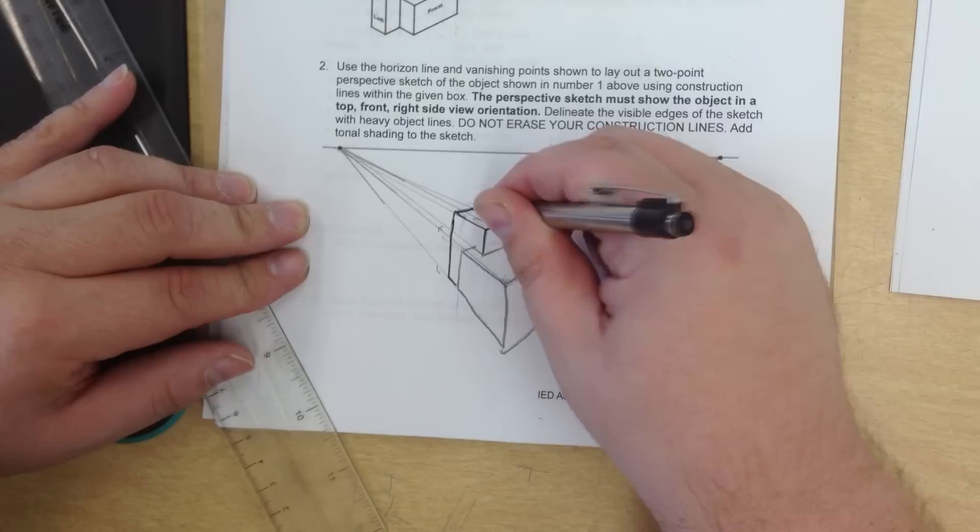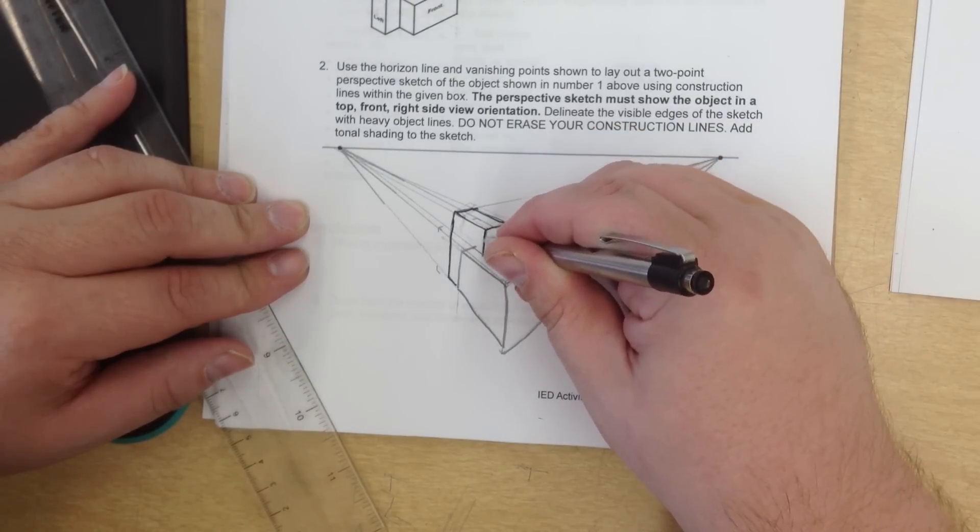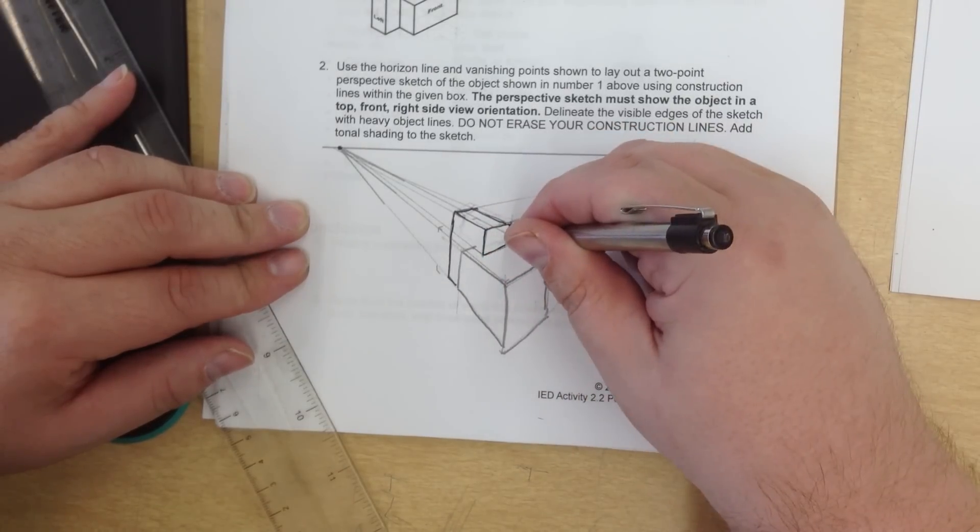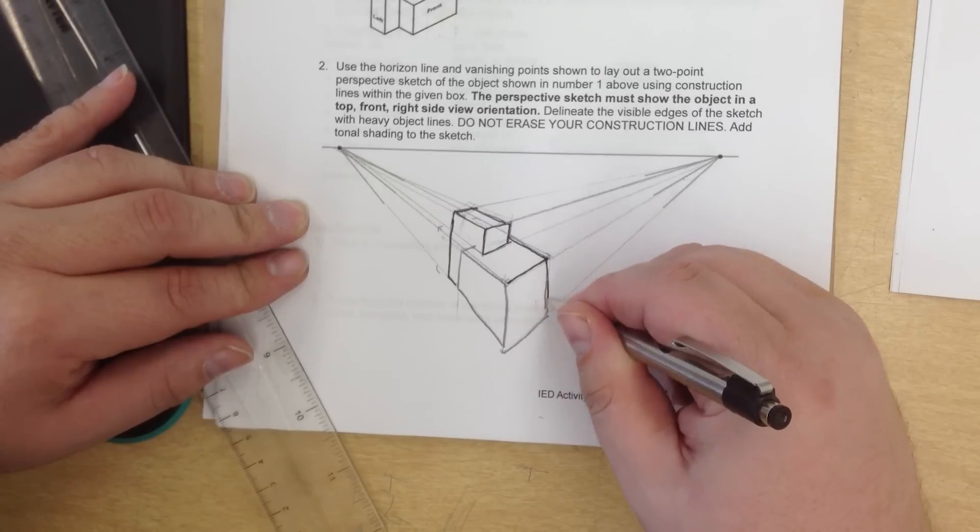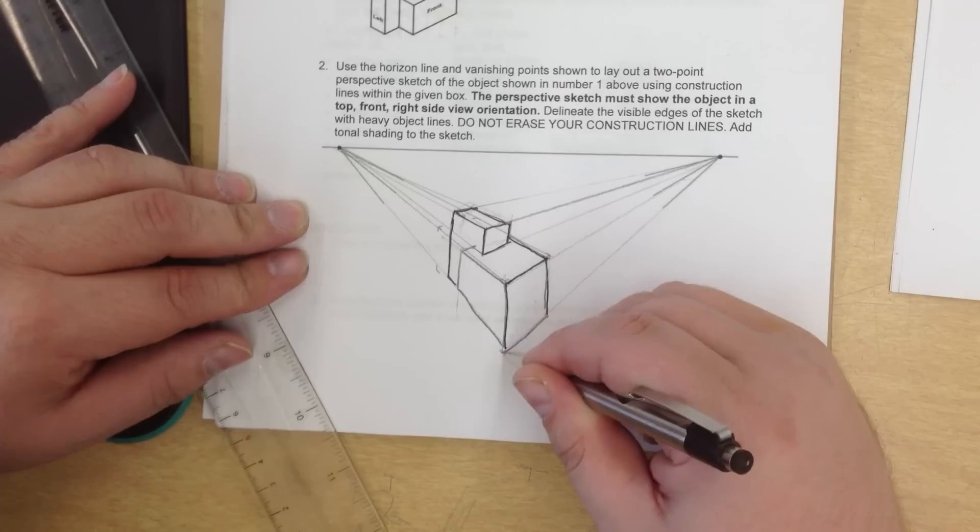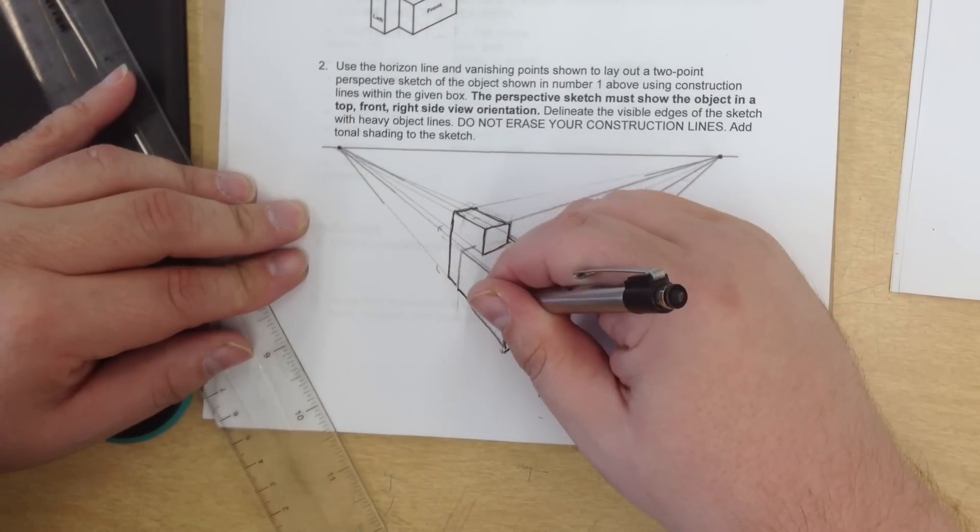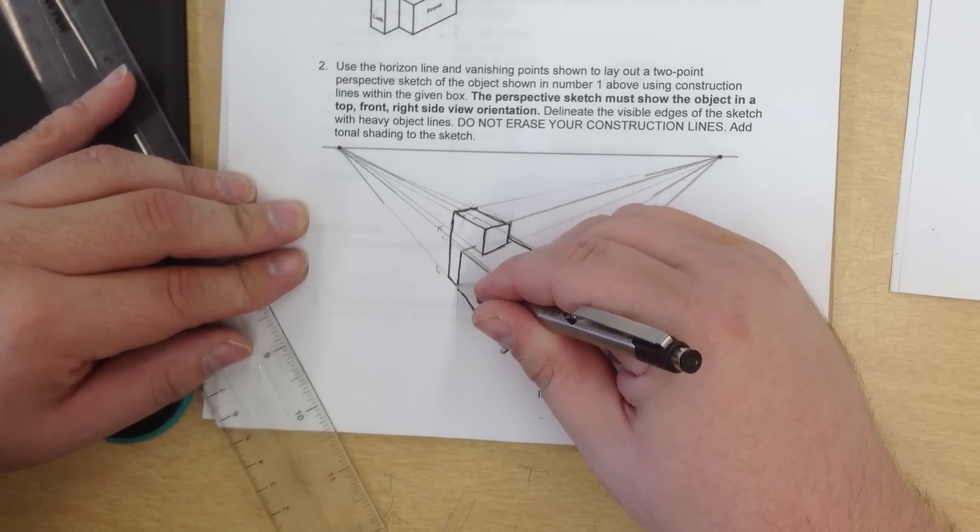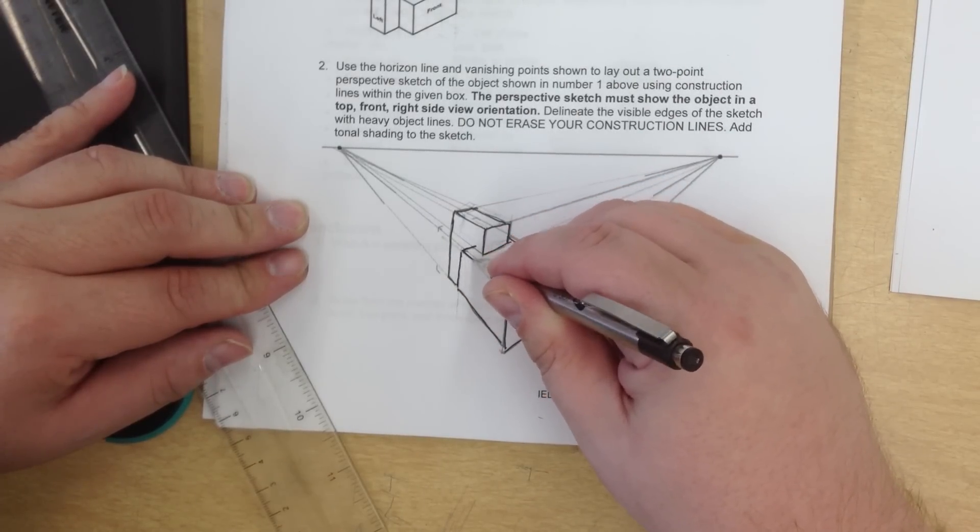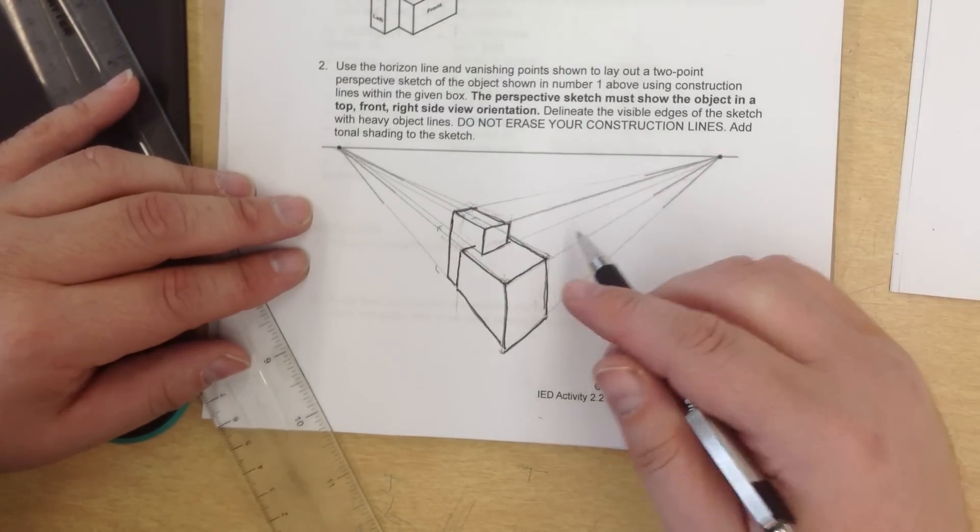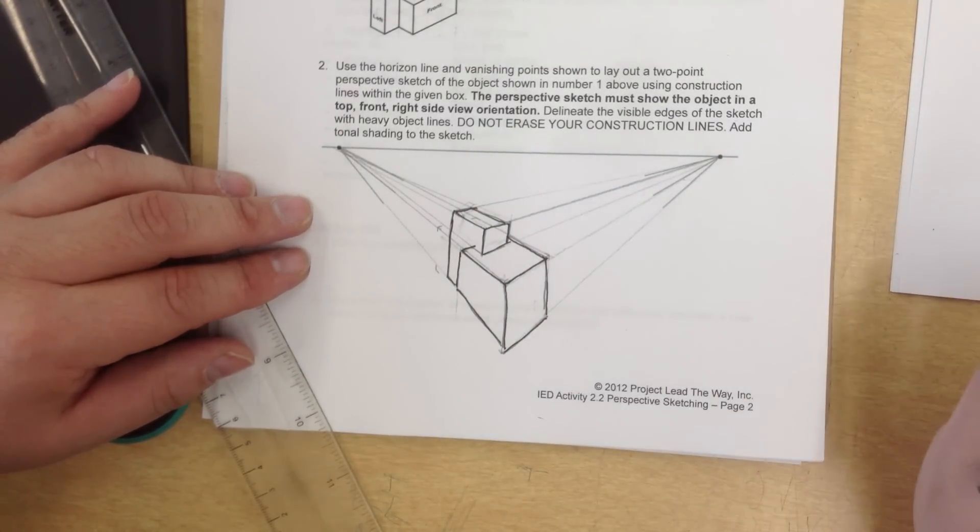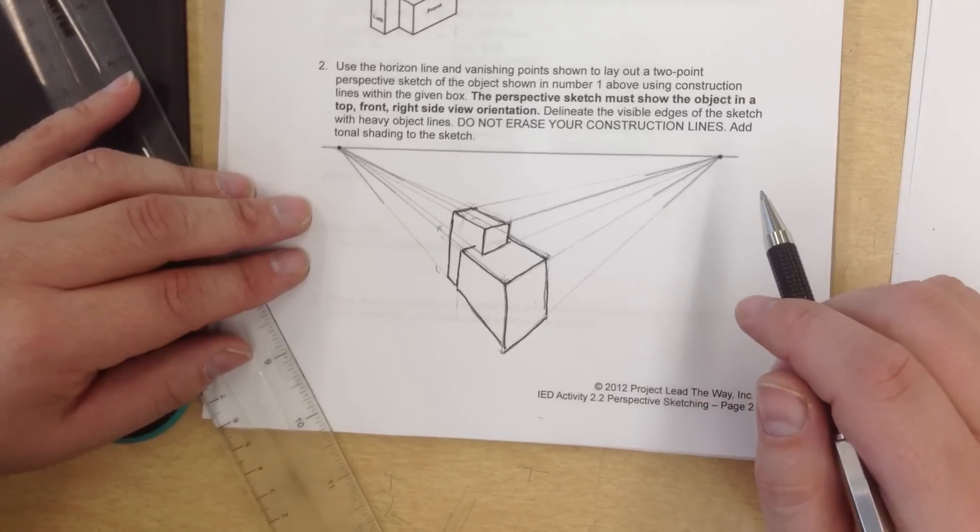If you'd like to do this with a straight edge, by all means, go for it. And there is our two-point perspective. Make sure you get your edge lines nice and dark. This is a confusing topic.